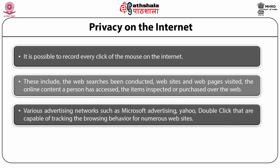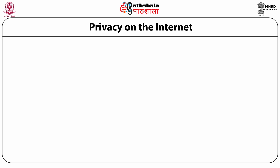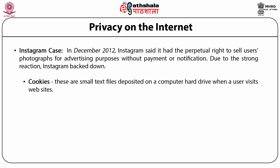Various advertising networks such as Microsoft Advertising, Yahoo, and DoubleClick are capable of tracking browser behavior across numerous websites. A commercial demand for this information is virtually insatiable, enabling organizations to aggregate data on consumer responses to products and services online. For example, in December 2012, Instagram said it had the perpetual right to sell users' photographs for advertising purposes without payment or notification. Due to the strong reaction, Instagram backed down.